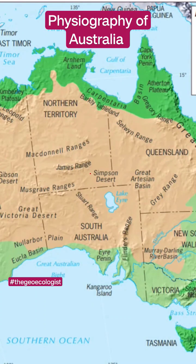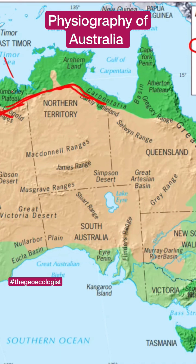Details of Australian physiography. If you observe carefully, right from the west, this is the Northwest Basin. Then you have the Hamersley Range, the Great Sandy Desert, and again a basin area. This entire greenish area you see represents tropical and subtropical grasslands and forest regions. Moving along, you have King Leopold, Kimberley Plateau, then Arnhem Land and the Gulf of Carpentaria.